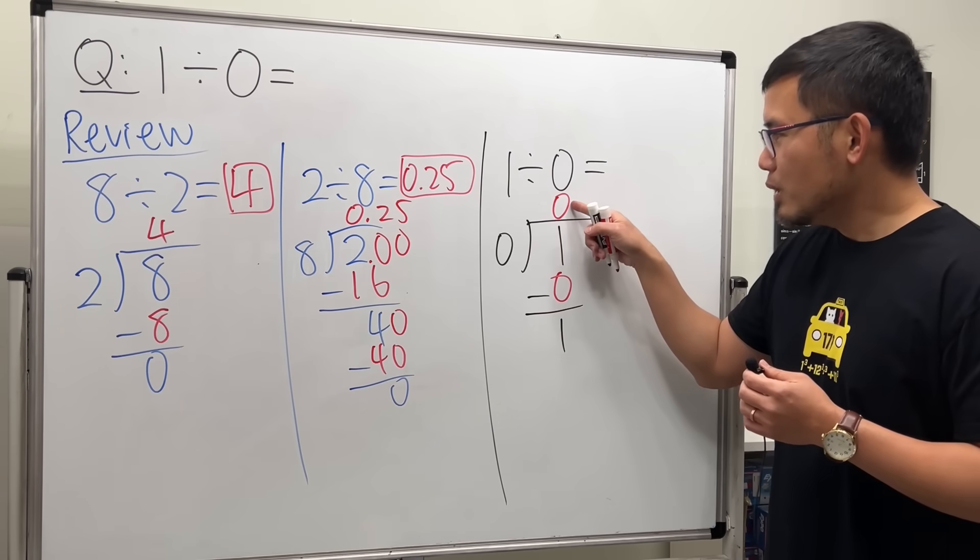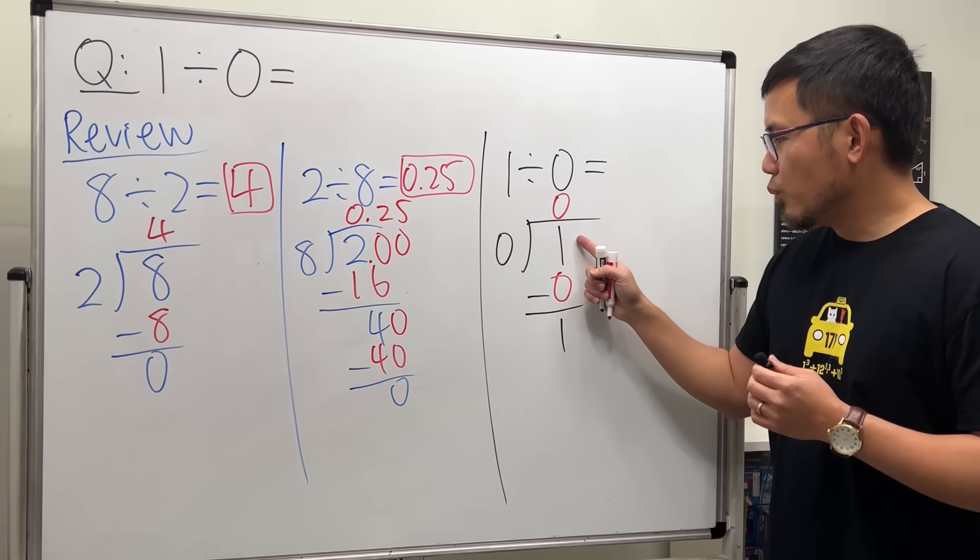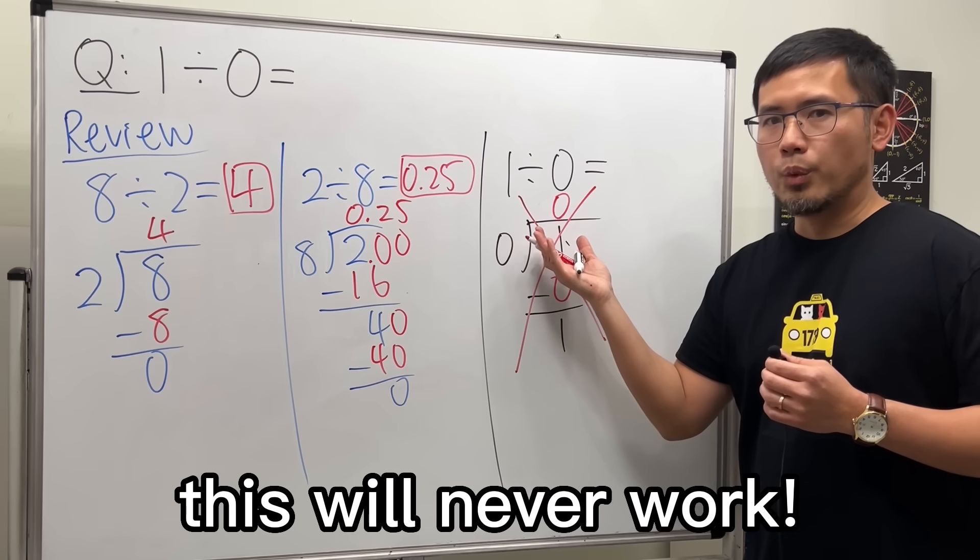So, in fact, no matter what you put down right here, multiply with 0, you always get 0. 1 minus 0 is 0. No matter what you try, this will never work. You cannot find a number.